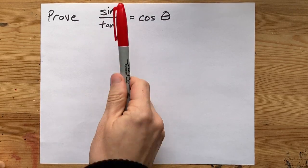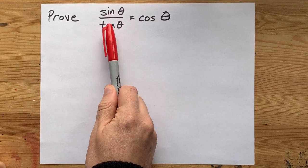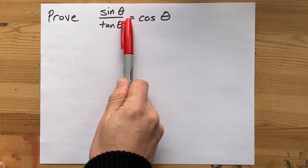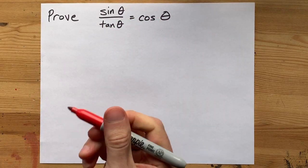Let's say we're trying to prove that sine of an angle divided by tan of that same angle is always equal to the cosine of that same angle.